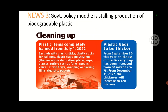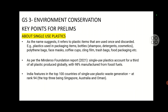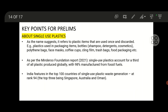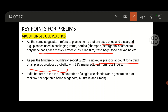The next issue: government policy models are stalling production of biodegradable plastics. This comes under GS3 Environment. Single use plastic is important for prelims — it refers to plastic used only once and then discarded, like face masks, coffee cups, and trash bags. Single use plastics account for a third of all plastic produced globally, with 98 percent manufactured from fossil fuels.